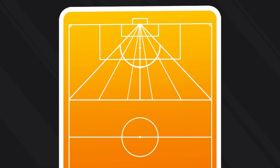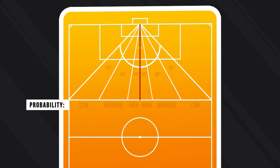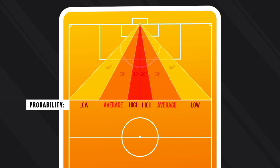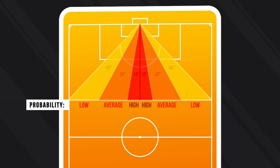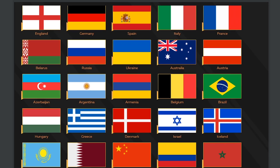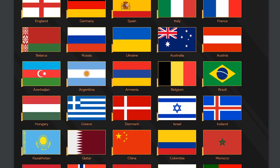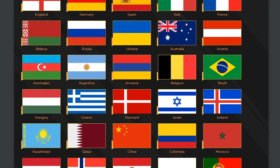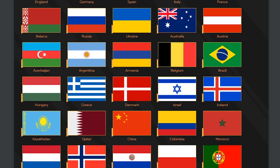The next key parameter is the angle of the shot, calculated from the imaginary line to the center of the goal line. When the angle is more open, the probability to score is higher. A sharp angle reduces the probability to score.